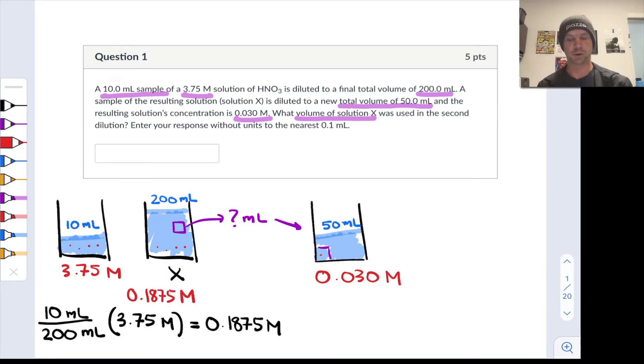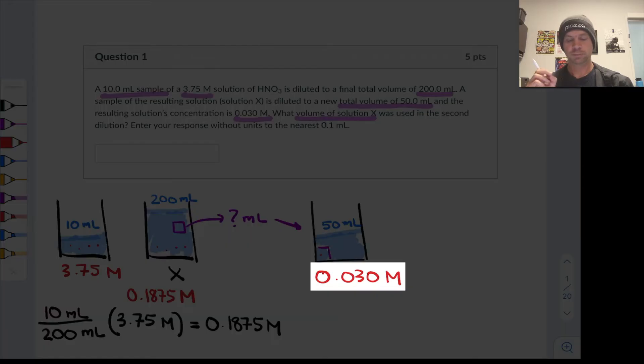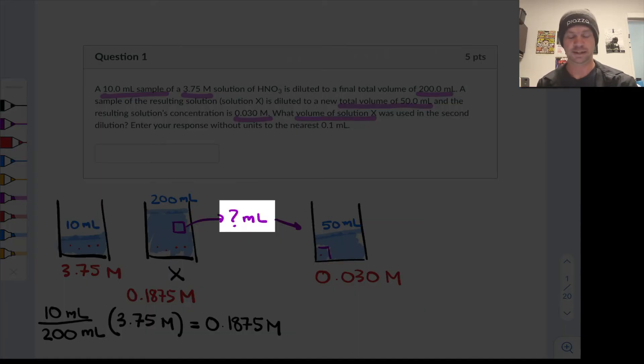So now we're sort of switching modes. We know the final concentration, we know the initial concentration, we know the final volume and what we want to find is the initial volume, in essence the volume of stock solution used.